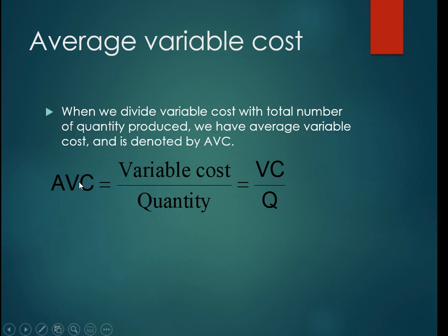The formula to calculate average variable cost is variable cost divided by quantity, or we can write it as VC/Q, where VC is variable cost and Q is the number of units produced.